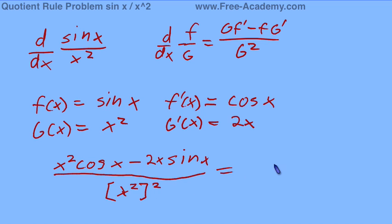Which of course, all of this simplifies to x squared cosine of x. Actually, if we're going to really simplify this, we'll factor an x out of the top and cancel it with one of the x's in the bottom. So, that will give us x cosine of x minus 2 sine of x over x to the third.